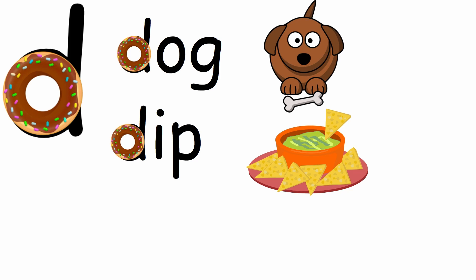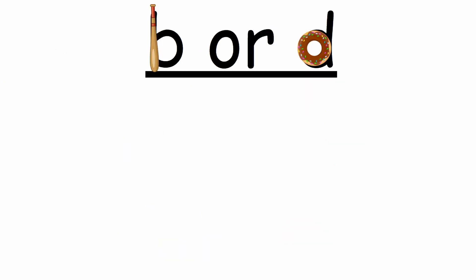Let's take a look at our last word. What is the first letter and what sound does it make? It starts with a donut, so that means it's a letter d and that makes the sound d. Let's go ahead and sound out our word and blend it: dot. One more time: dot. What's our word? Dot. Now you're going to figure out if the word starts with a b sound or if it starts with a d sound.